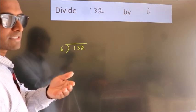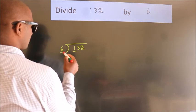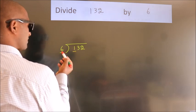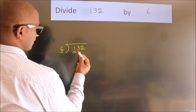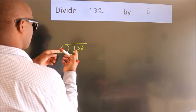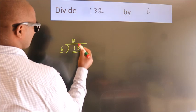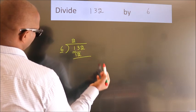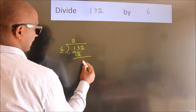Next, here we have 1, here 6. 1 is smaller than 6, so we should take two numbers: 13. A number close to 13 in the 6 times table is 6 twos, which is 12. Now we subtract, and we get 1.